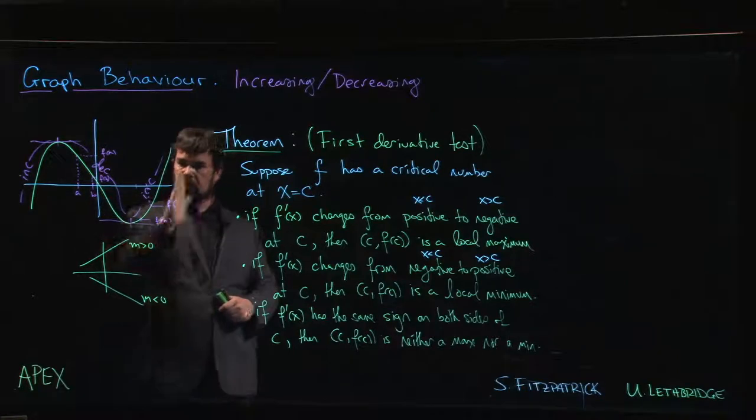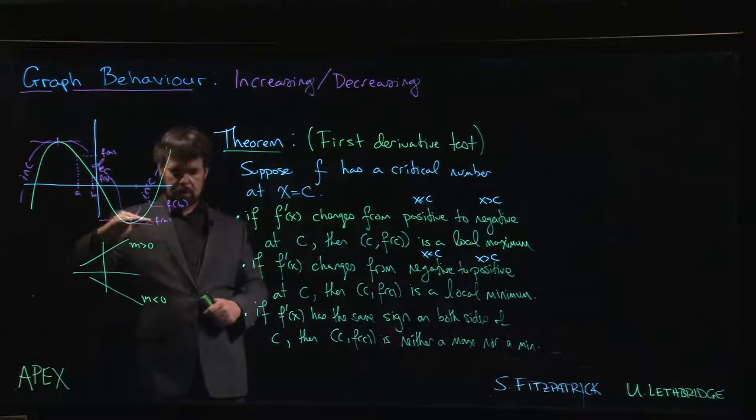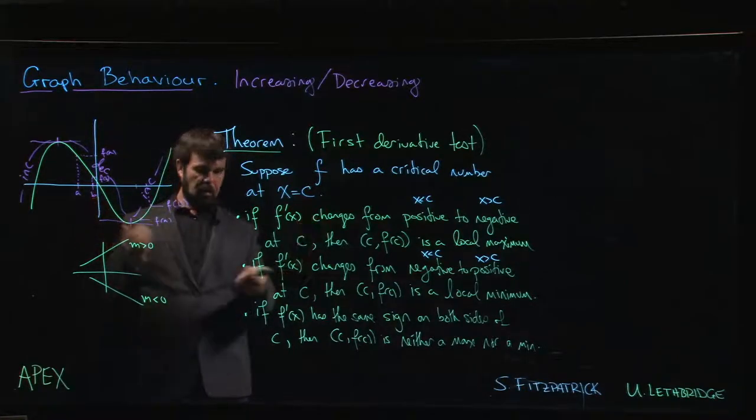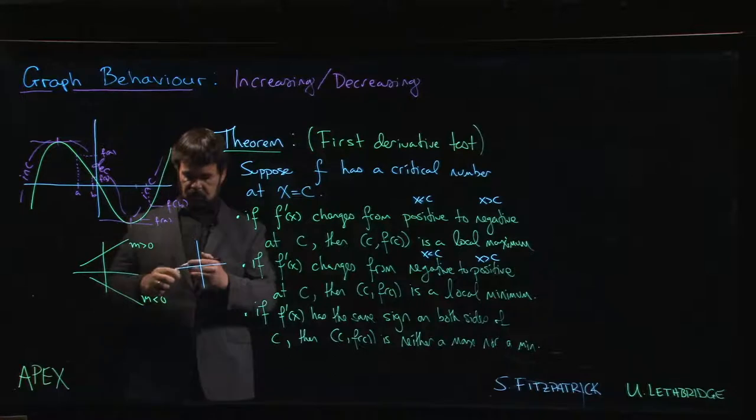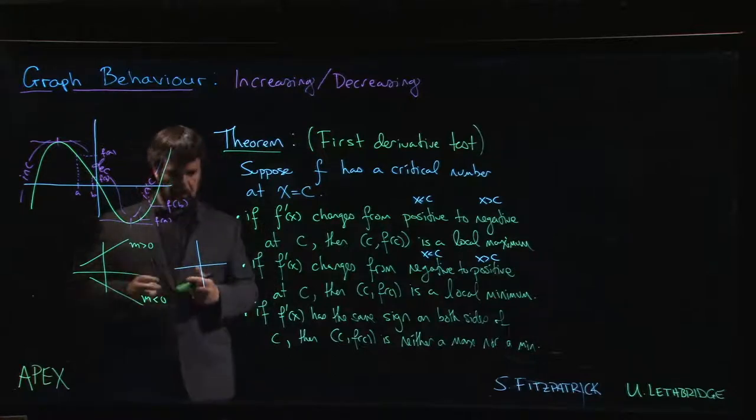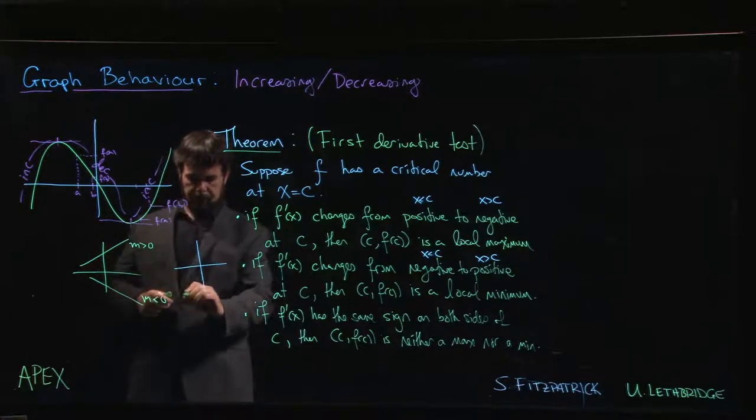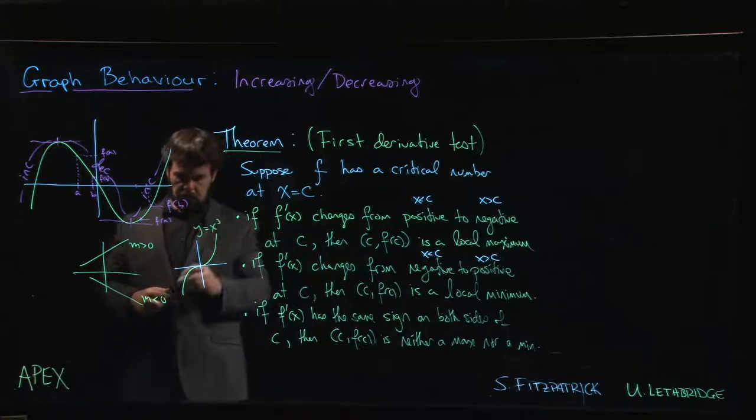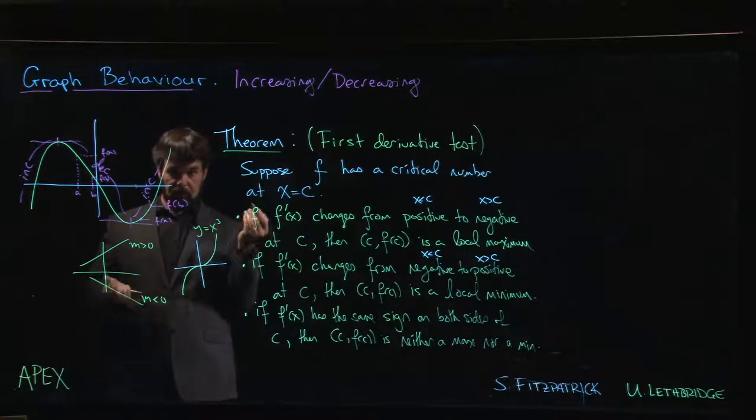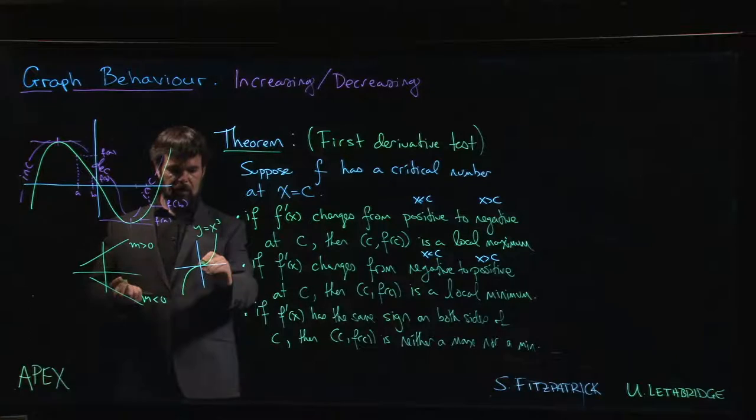If we have the same sign on both sides, typical examples are things like y equals x cubed, where we have a horizontal tangent at the origin but we're increasing on either side. The derivative is positive here and positive here - there's just this one point where it's zero, and there's neither a maximum nor a minimum.